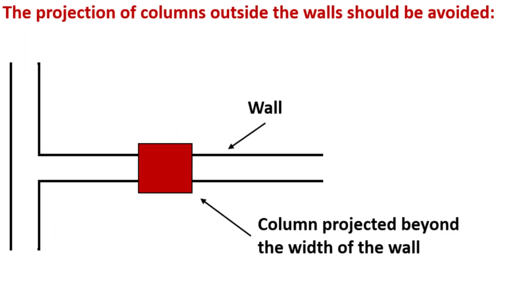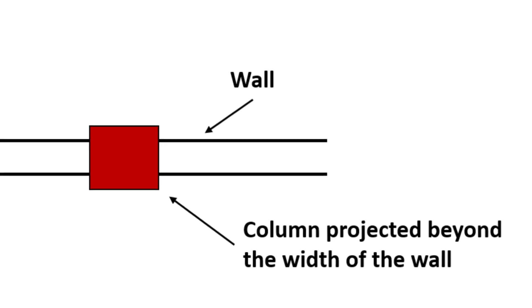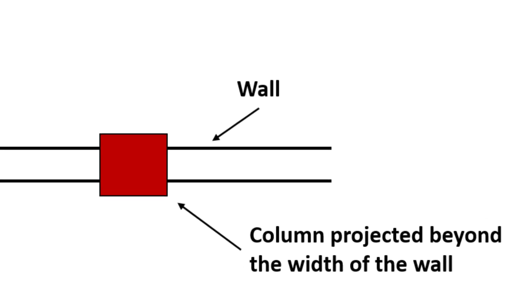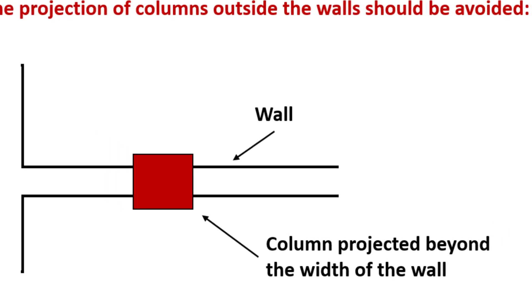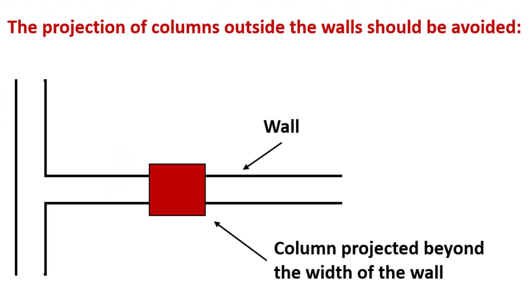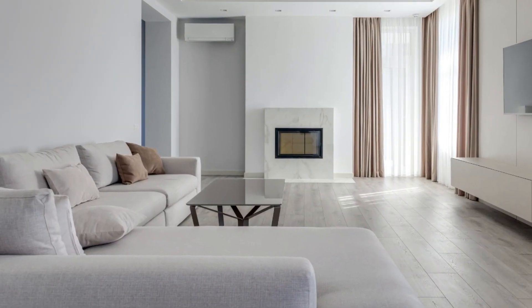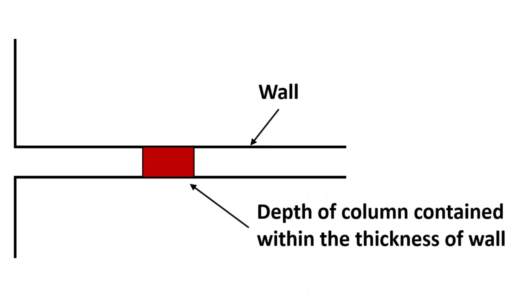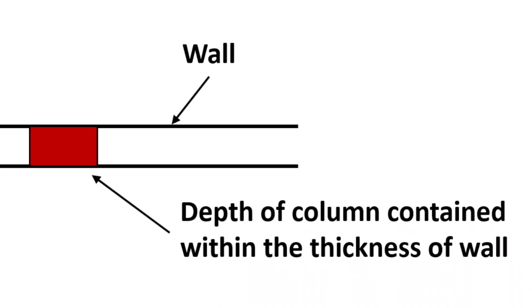The projection of columns outside the walls should be avoided. When columns extend beyond the walls, they not only look bad, but also make it difficult to use corners and place furniture against the wall. To avoid these issues, the depth of the column should be contained within the width of the wall.